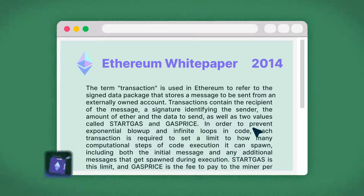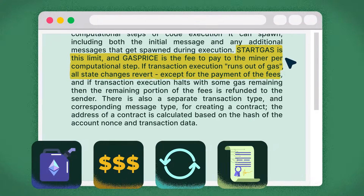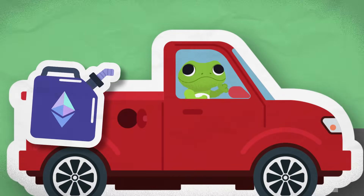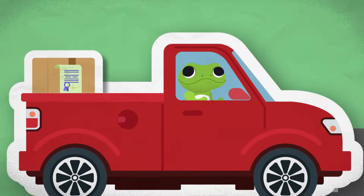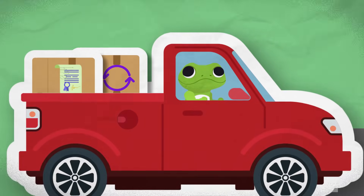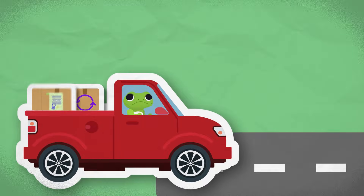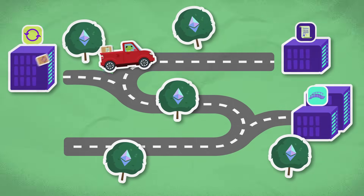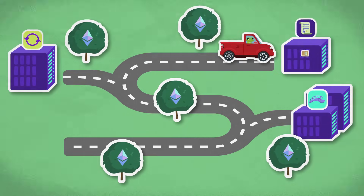Simply put, gas fees are the costs associated with executing transactions and smart contracts on the network. Ethereum introduced the term gas as a unit of measure to handle the execution of smart contracts and allocate network resources efficiently. Just like how gas fuels a car, allowing it to move, gas on Ethereum fuels the execution of operations on the network.